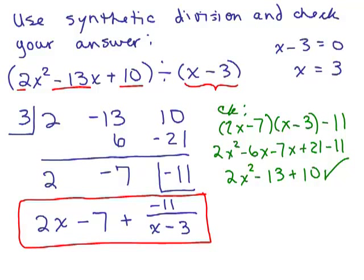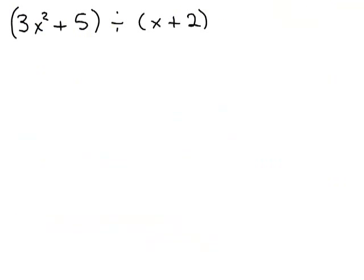Let's do one more. Here's our next problem. 3x squared plus 5 divided by x plus 2. So we take this and we're going to solve for x by writing x plus 2 equals 0, so x is negative 2. That's what goes in the little box over here.